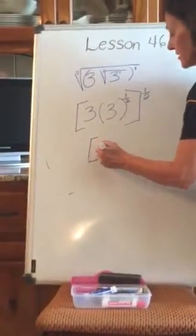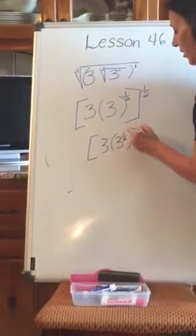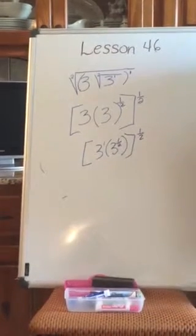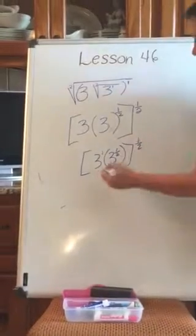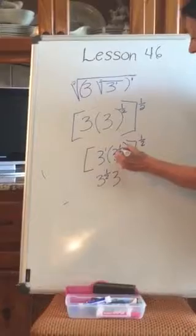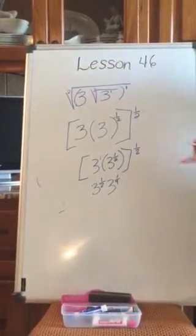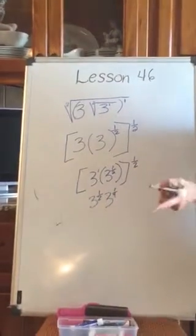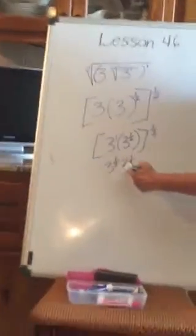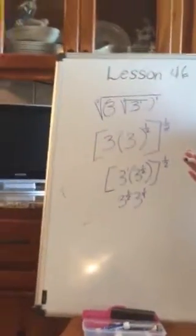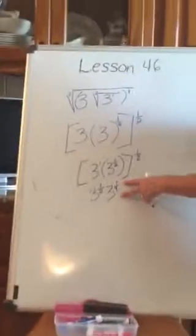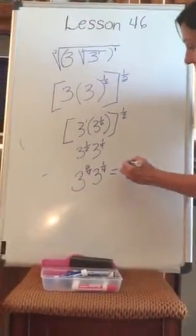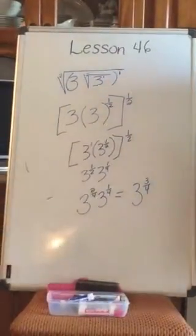Let's resolve what's inside first. This is really 3 times 3 to the 1 half, all of that raised to the 1 half. When I raise an exponent to an exponent, I multiply them. So that's 3 to the 1 half times 3 to the 1 fourth. Now I have the same base 3 with two exponents. To add them, I need a common denominator: 1 half is 2 fourths, plus 1 fourth, giving 3 fourths. So the answer is 3 to the 3 fourths.